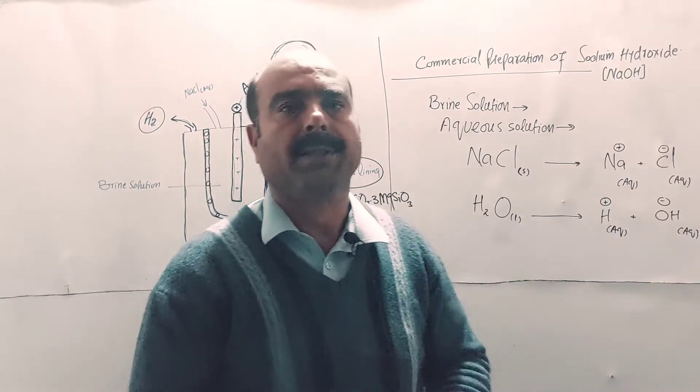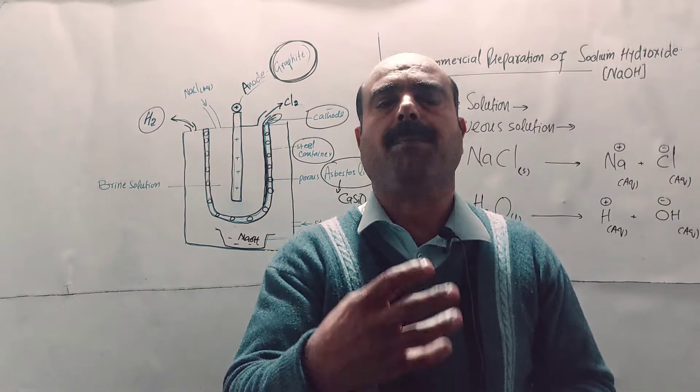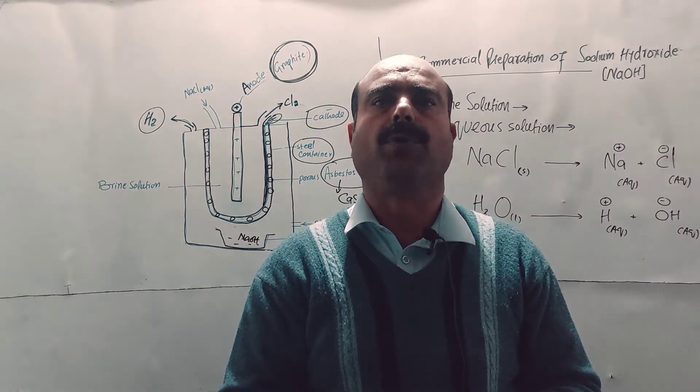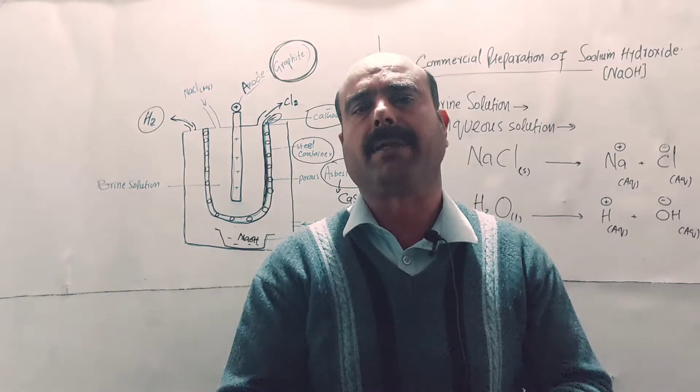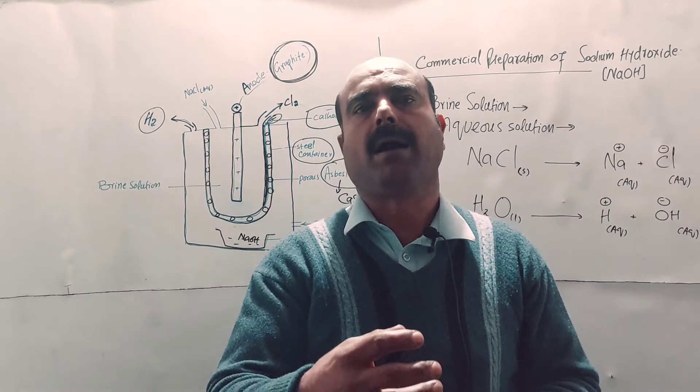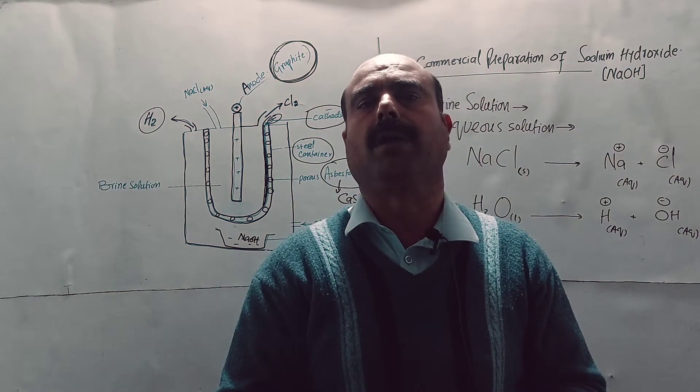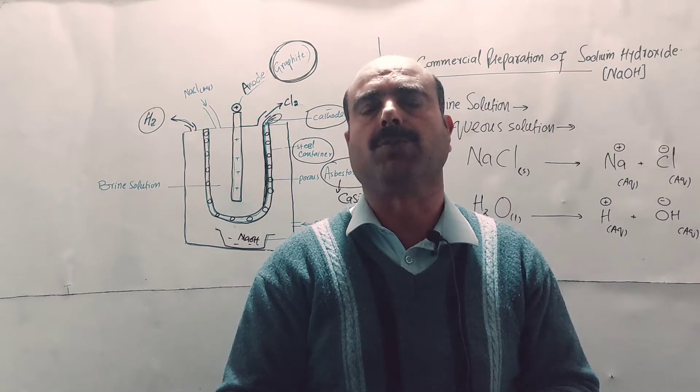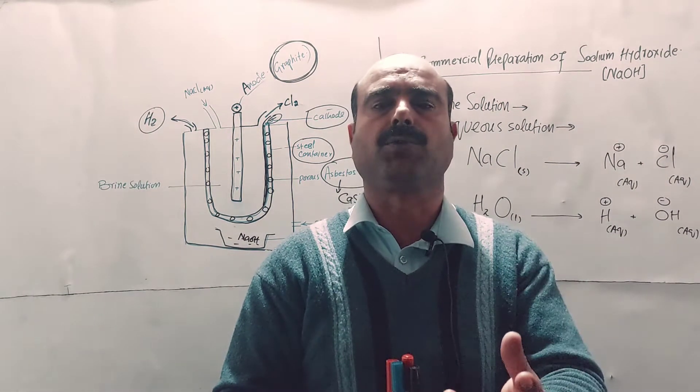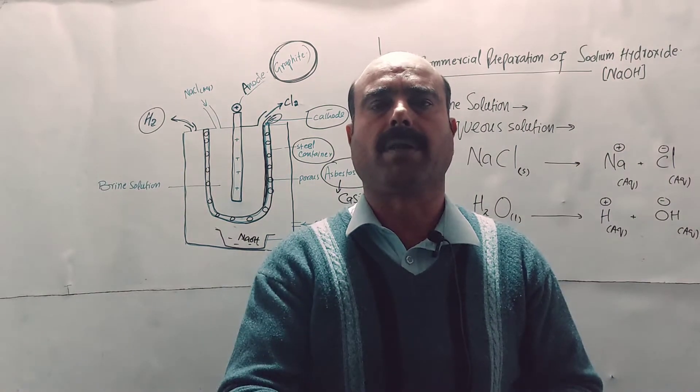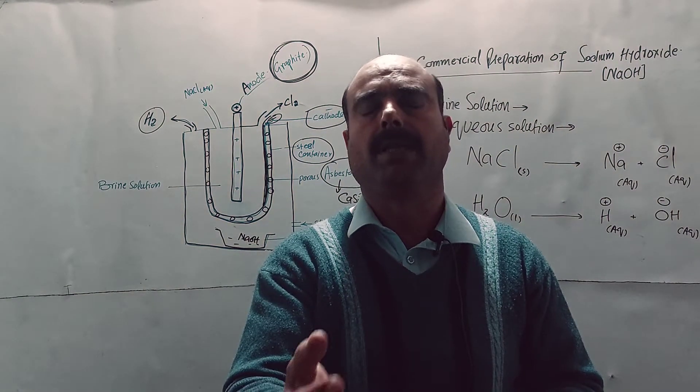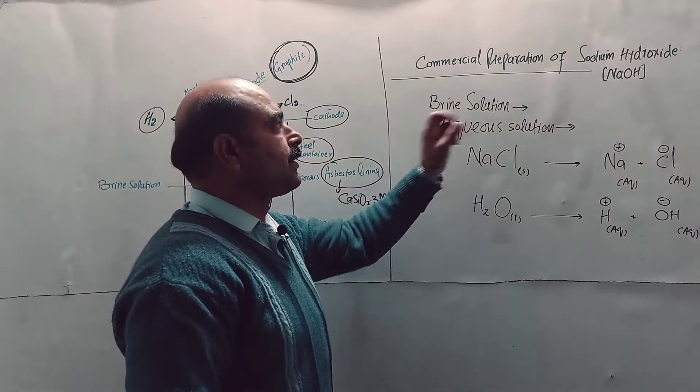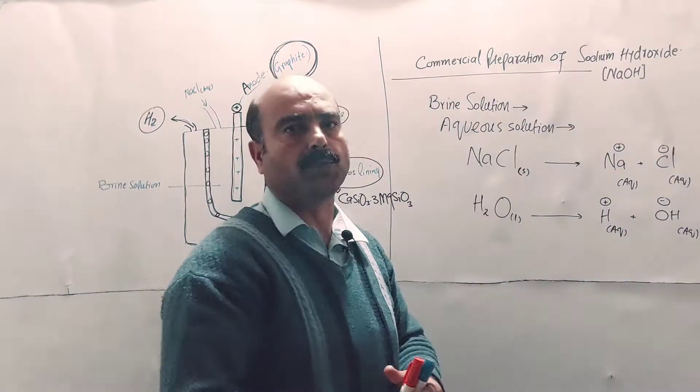It is prepared by the electrolysis of brine. What is brine? Concentrated solution of sodium chloride is known as brine. It is a 30 percent solution of sodium chloride. 30 grams sodium chloride salt dissolved in water, total mass of solution equals 100 grams. This is the brine solution.